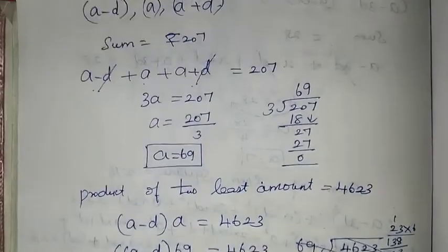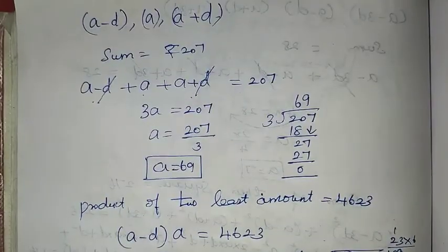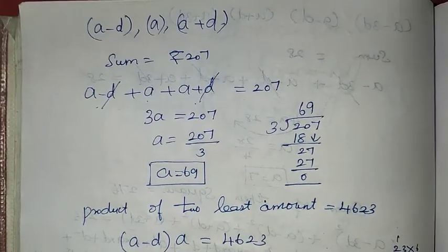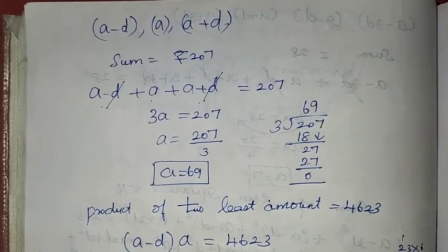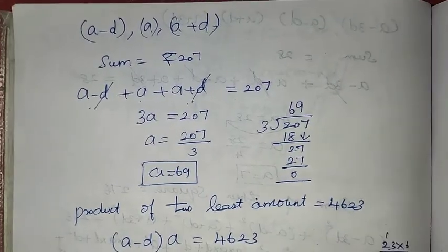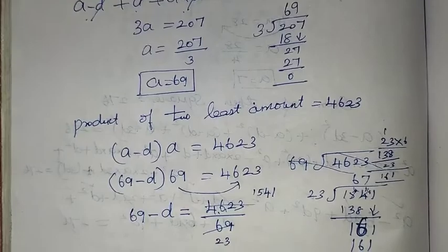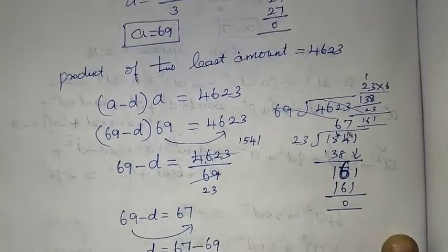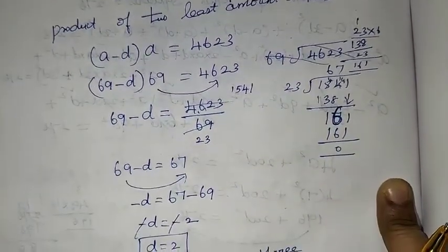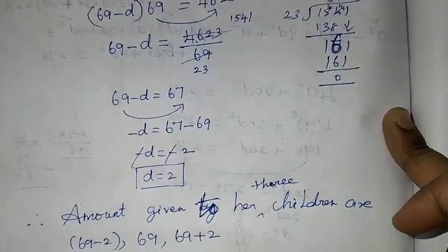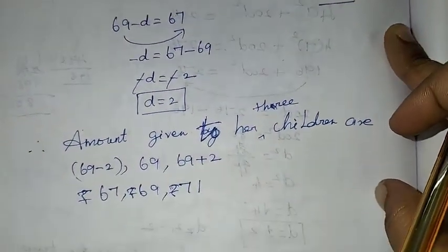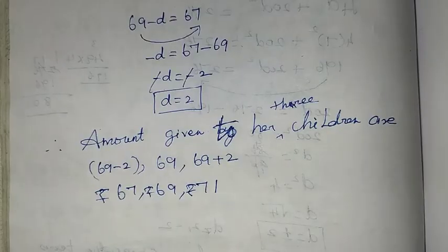An important note: since the question says 3 children and amounts are in AP, we assumed 3 consecutive AP terms — that is the key concept here. I hope this is clear and understandable. Thank you so much for watching, students. Bye-bye.